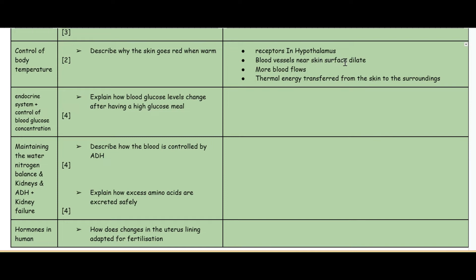Next question: endocrine system and control of blood glucose concentration. Explain how the blood glucose levels change after having a high glucose meal. Your pancreas produces insulin. Remember insulin and glucose - this causes the glucose to move from the blood to the cells in the liver and the muscle cells and that causes it to then break down.